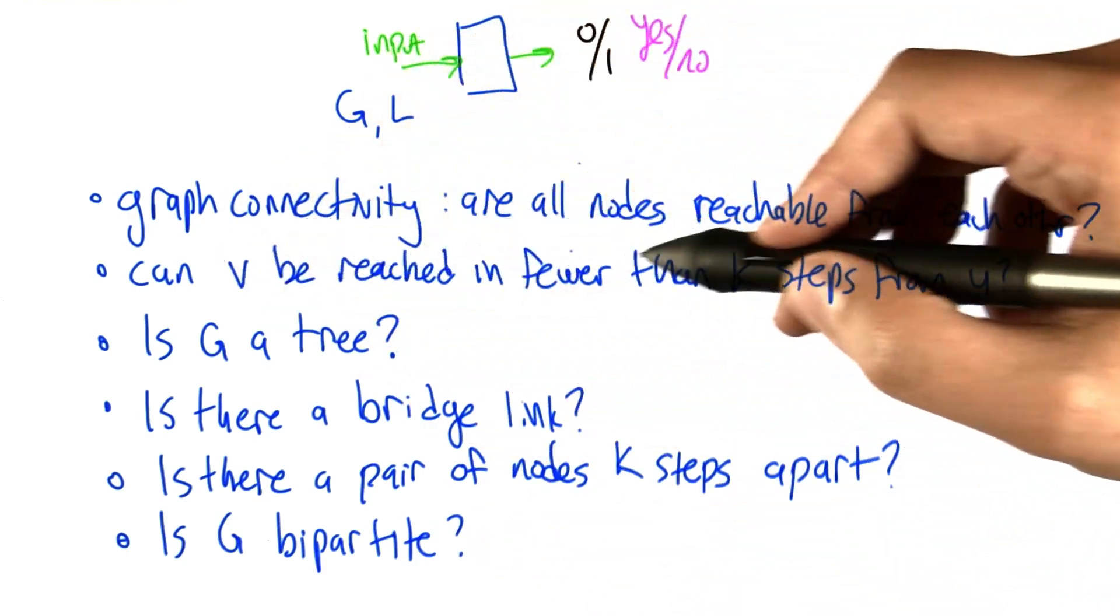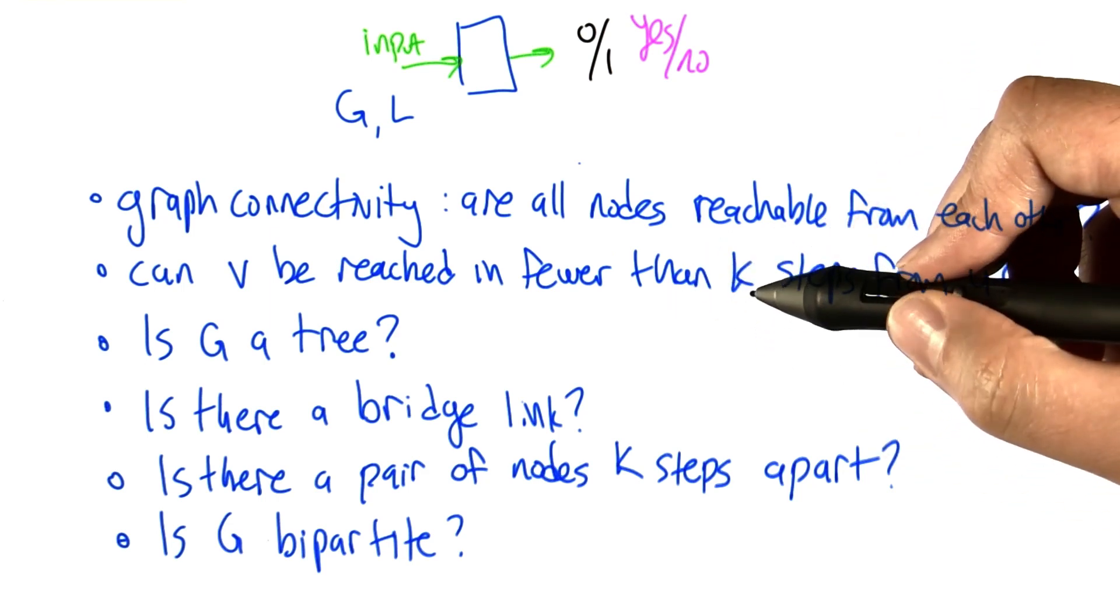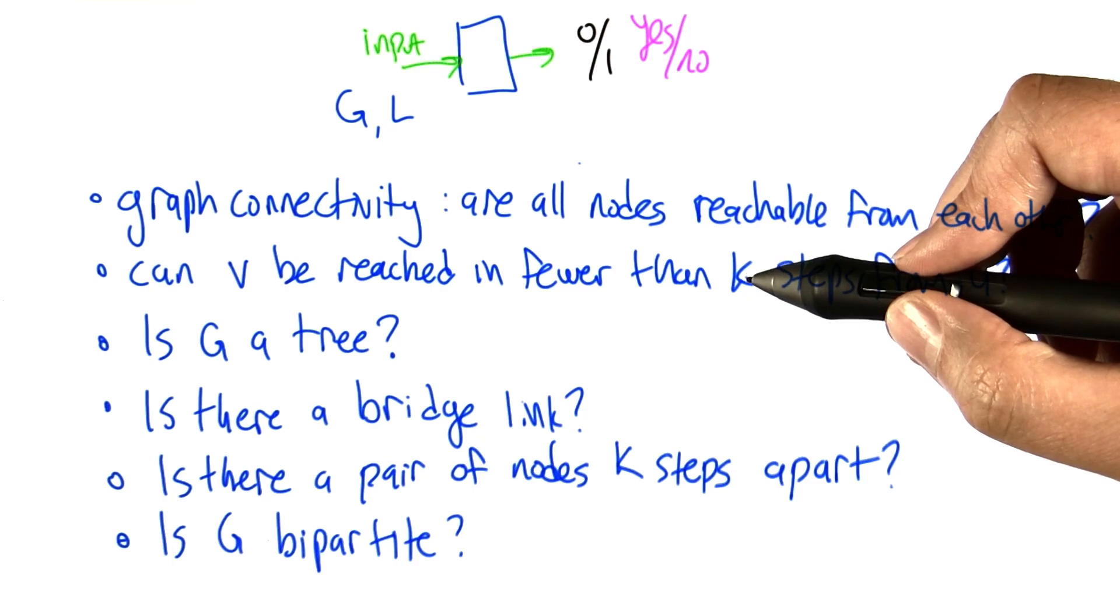Or, can v be reached in fewer than k steps from u? Well, if it can be, show me the path. I would really like to know the path, because that's what I'm going to be able to work with.